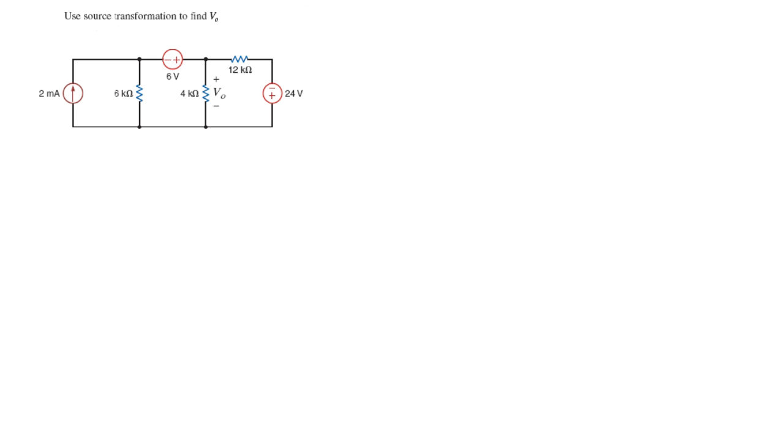Now, there are rules. You can't just change it whenever you feel like it. For example, this current source can be changed into a voltage source because it's in parallel with a resistor.